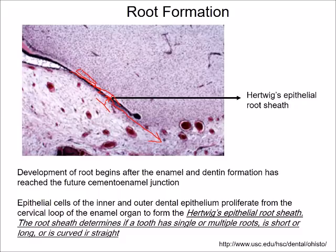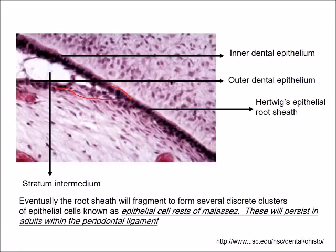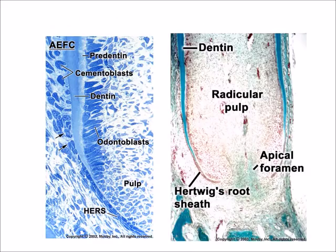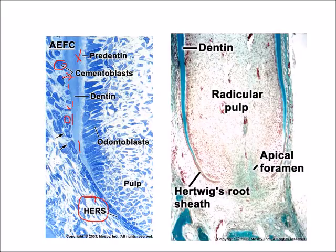In root formation: the outer cells of the dental papilla transform into odontoblasts which produce dentine. Once dentine is formed, Hertwig's root sheath disintegrates, leaving spaces, allowing cells of the dental sac to come into contact with the dentine. These cells transform into cementoblasts and start to produce cementum over the dentine. This process continues downward until the root is completely formed. The remnant of Hertwig's root sheath in the periodontal ligament is called the epithelial rest of Malassez.